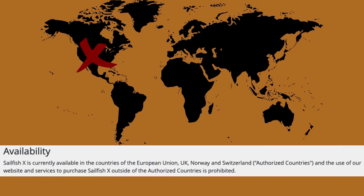Now, if everything so far sounds reasonable and great, this one could be a deal breaker for you. It is only available in the European Union, the UK, Norway, Switzerland, and other authorized countries as Jolla sees fit. Meaning that for all of those in the United States, it is not available officially — you cannot get a supported copy of Sailfish X in the United States. Having said that, there are resourceful folks that have copies of Sailfish X, and the way to do that would be to research online.